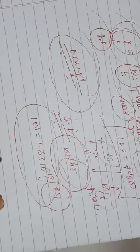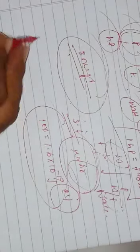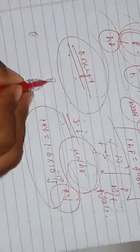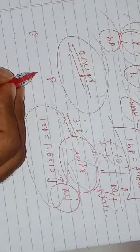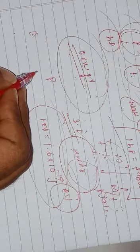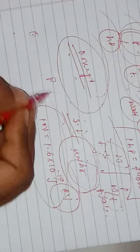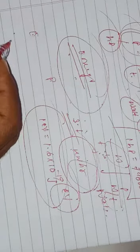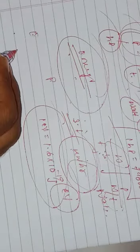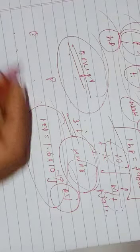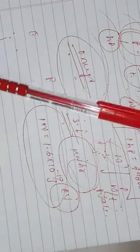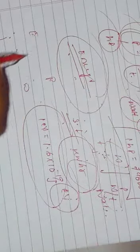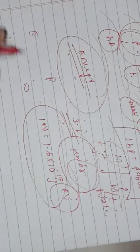Comparing energy and power: energy of a body is its capacity to do work, while power of a source is the rate at which energy is supplied. Energy spent does not depend on time, but power depends upon time. The unit of energy is Joule and the unit of power is Watt. I believe this video will help you understand work, power, and energy. Thank you.